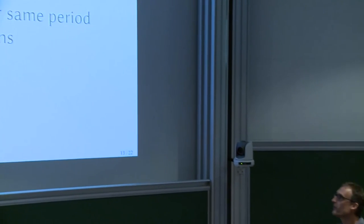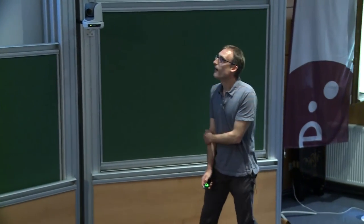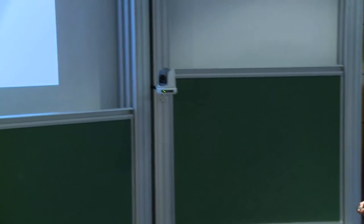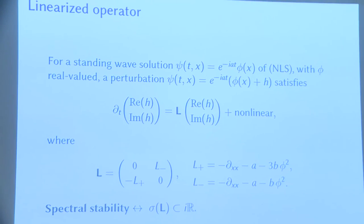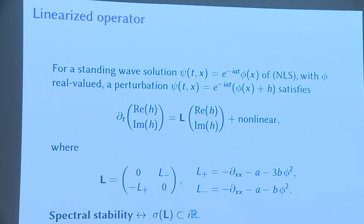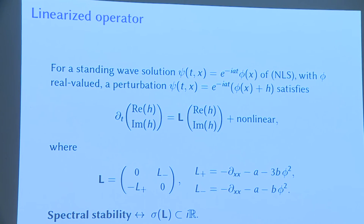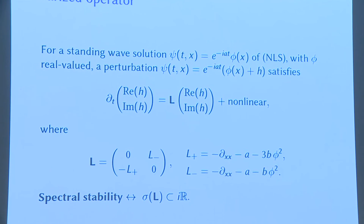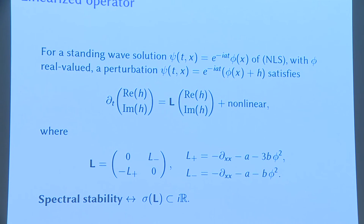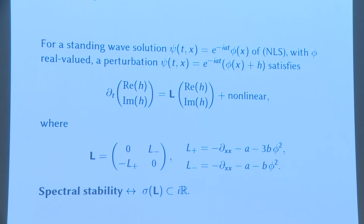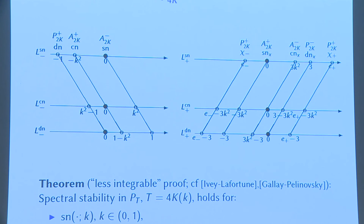Let's move to the weaker notion of spectral or linear stability. If you linearize around the periodic wave, the linearized operator has a standard form made up of two self-adjoint Sturm–Liouville operators L+ and L−. The relationship between the spectrum of these self-adjoint operators and the spectrum of the full linearized operator is somewhat complicated. Spectral stability means the spectrum of the full linearized operator lies entirely on the imaginary axis — no exponentially growing modes.